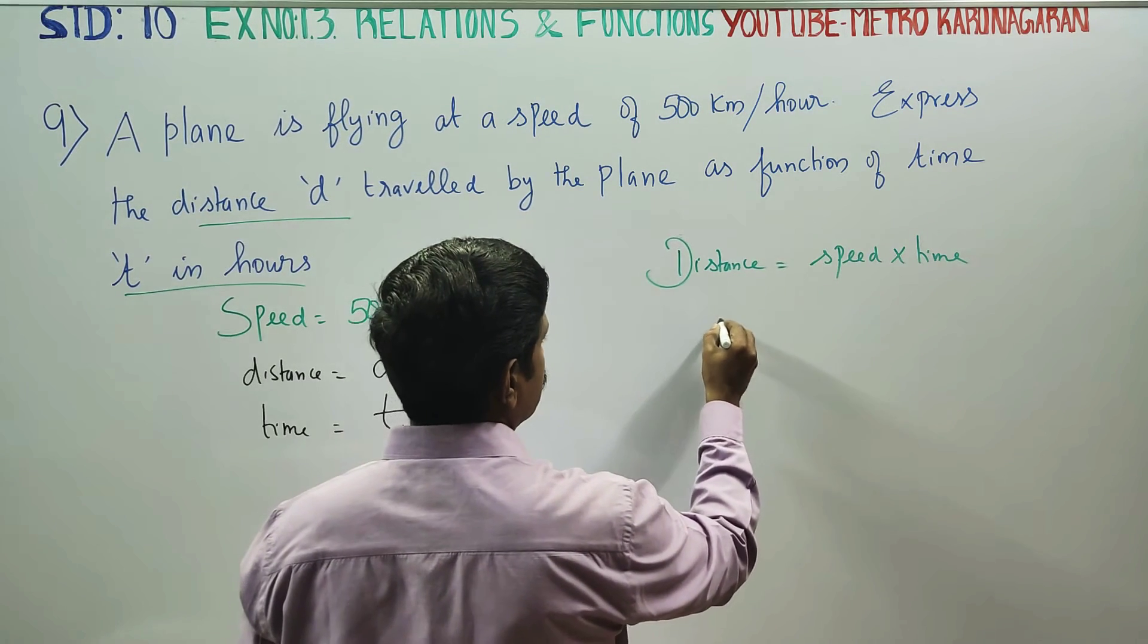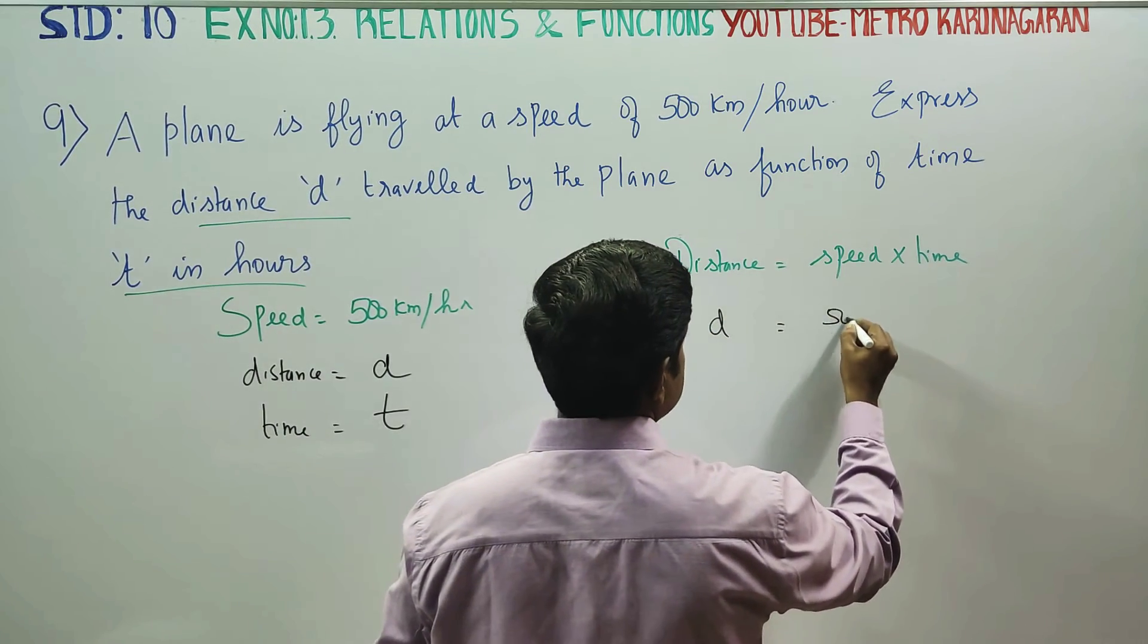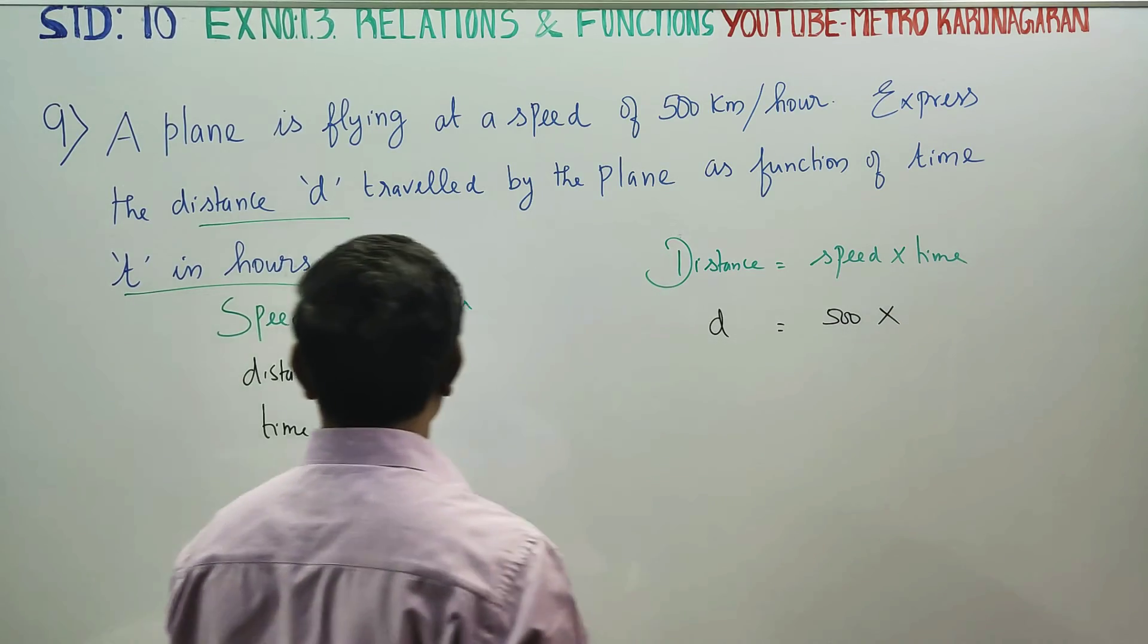Distance is equal to, distance is d. Speed, the answer is 500 km per hour, into time. Into time is t.